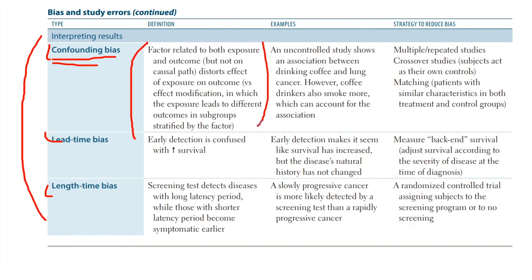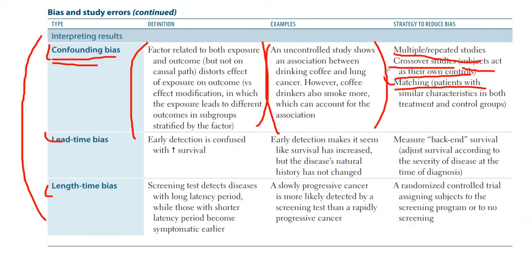The ways to reduce confounding bias include multiple repeated studies, crossover studies — where subjects act as their own controls — and matching, where patients with similar characteristics are placed in both treatment and control groups. For example, if someone is a smoker, you try to have one smoker in the treatment group and one in the control group.